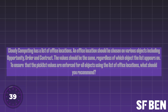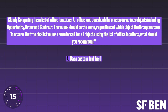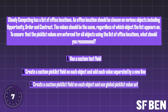Question two. Cloudy Computing has a list of office locations. An office location should be chosen on various objects, including opportunity, order and contract. The value should be the same regardless of which object the list appears on. To ensure that the pick list values are enforced for all objects using the list of office locations, what should you recommend? A: Use a custom text field. B: Create a custom pick list field on each object and add each value separated by a new line. C: Create a custom pick list field on each object and use a global pick list value set. D: Use a custom lookup field.